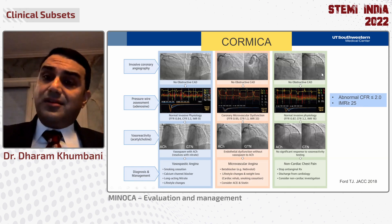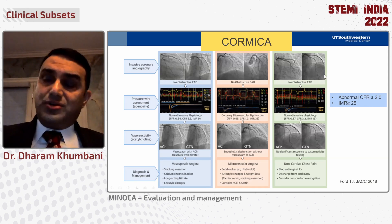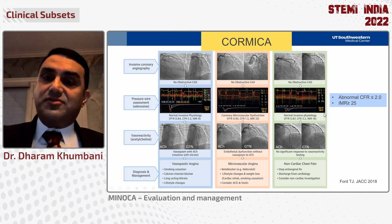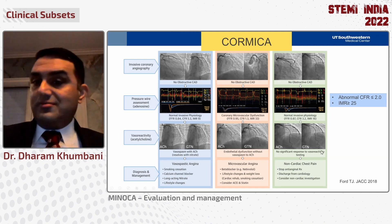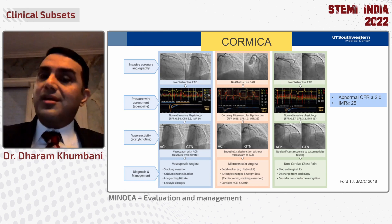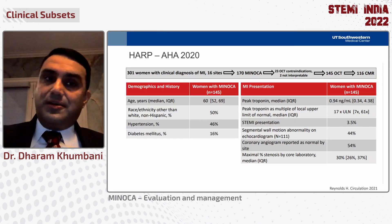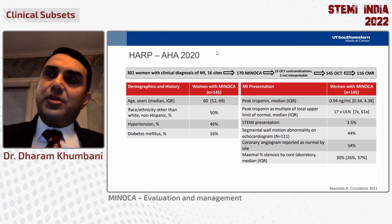The third group has no angiographic disease, normal invasive physiology, and no vasospasm. Those patients probably don't have cardiac chest pain and other sources should be entertained. In the setting of MINOCA specifically, there was a very large study by Harmony Reynolds and colleagues out of NYU.